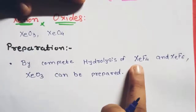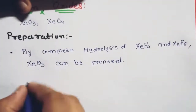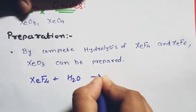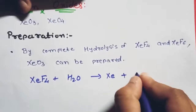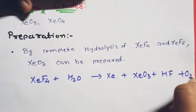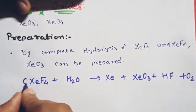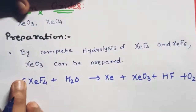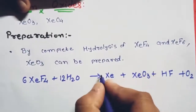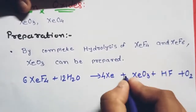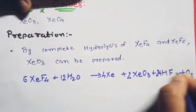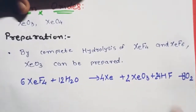For xenon tetrafluoride hydrolysis: XeF₄ + H₂O gives Xe + XeO₃ + HF + O₂. Balancing this: 6XeF₄ + 12H₂O → 4Xe + 2XeO₃ + 24HF + 3O₂.